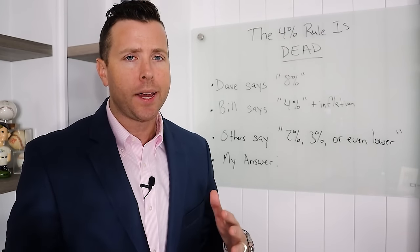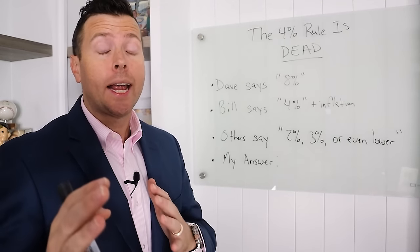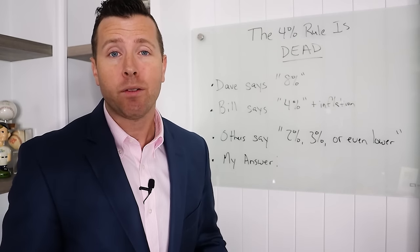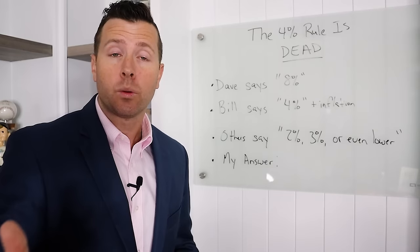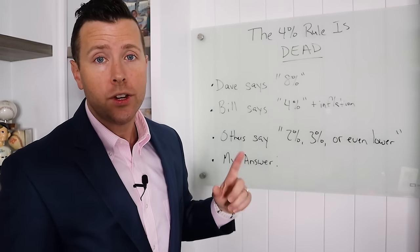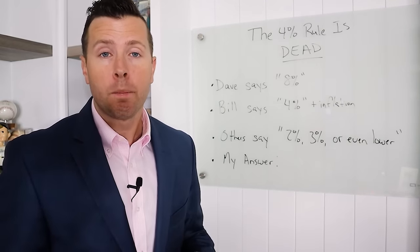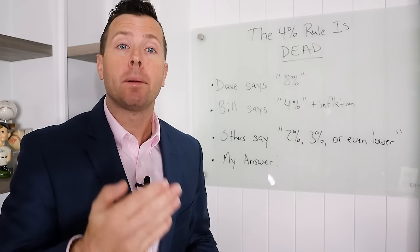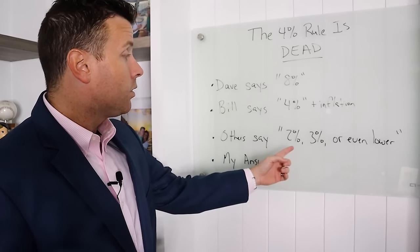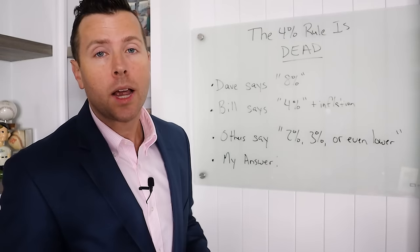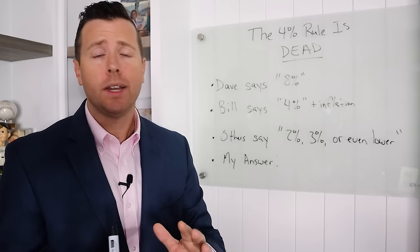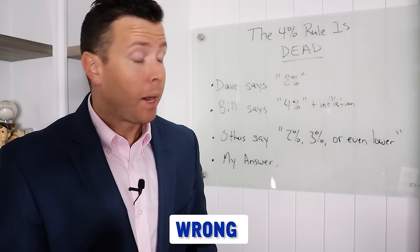Let's look at what other people say about the 4% rule. Dave Ramsey says that you can take out 8% from your retirement savings, and that is perfectly fine. He's also saying you're going to average about 12% with four specific mutual funds. Bill Bergen, who championed the 4% rule, says you can take 4% plus inflation. Others say 2%, 3%, and sometimes even lower. I've seen as low as 1.2% retirement income withdrawal. I believe that every one of those answers is wrong.